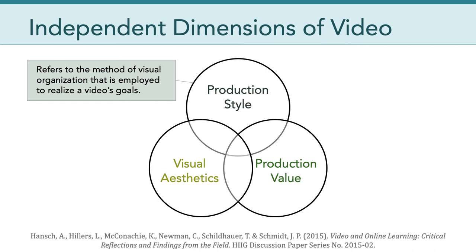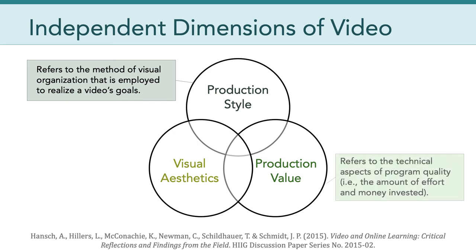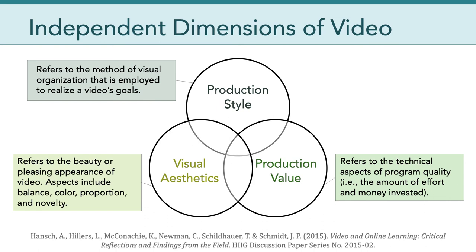Production style refers to the method of visual organization that is employed to realize a video's goal. The second dimension is production value, which refers to the technical aspects of program quality — how good is the visuals, how good is the cinematography — and it's often a reflection of the amount of effort and money that went into the production. Third, but certainly not least, is visual aesthetics, which refers to the beauty or pleasing appearance of the video, and aspects include balance, color, proportion, and novelty.